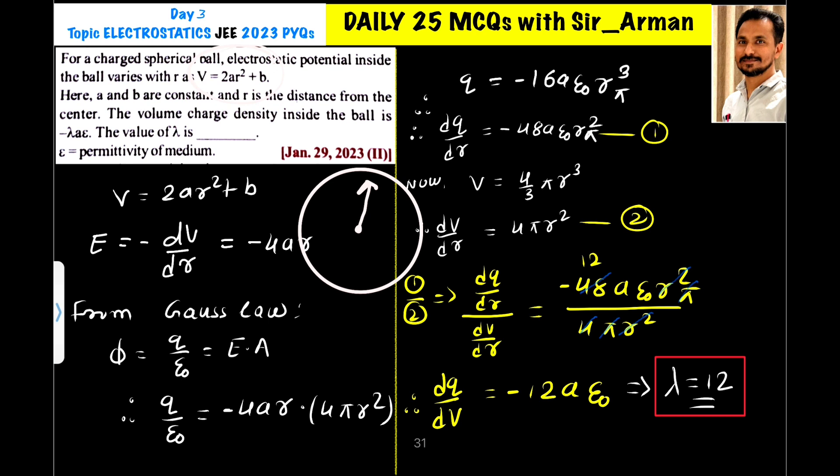Now, we know that the electric field and the electric potential are related by equation minus dV by dR. That is, we will differentiate this equation with respect to electric field. On differentiating, the 2 will come down here, so it is minus 4AR, and differentiation of B is 0 because it is a constant.